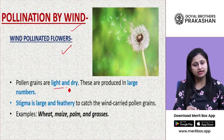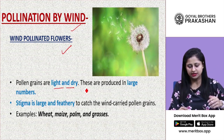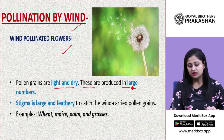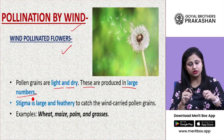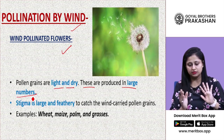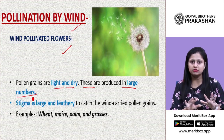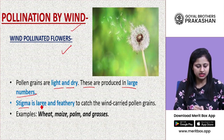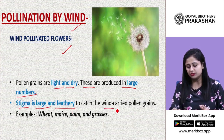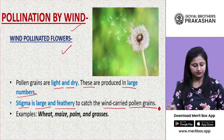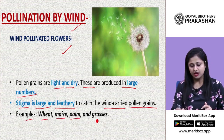In wind-pollinated plants, pollen grains are light and dry so the wind can easily carry them. They are produced in large numbers so that even with wastage due to wind, sufficient pollen grains reach the target. The stigma is large and feathery to catch wind-carried pollen grains. Some examples are wheat, maize, palm, and grasses.